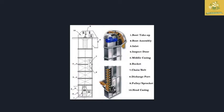This is a picture of a bucket elevator showing its 10 important parts. The first part is the boot take-up or boot assembly, which provides stability at the bottom. The third part is the inlet, and the fourth part is the inspection door.